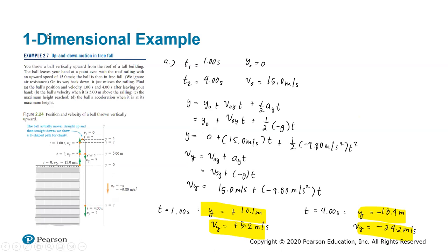Next is up and down motion in free fall. You throw a ball vertically upward from the roof of a tall building. The ball leaves your hand at the roof railing level with an upward speed of 15 meters per second. The ball is then in free fall — ignore air resistance. On its way back down it just misses the railing. Find: A, the ball's position and velocity 1 second and 4 seconds after leaving your hand; B, the ball's velocity when it's 5 meters above the railing; C, the maximum height reached; and D, the ball's acceleration at its maximum height.